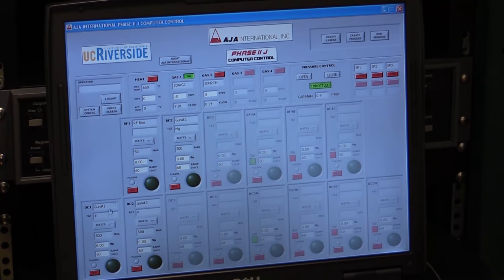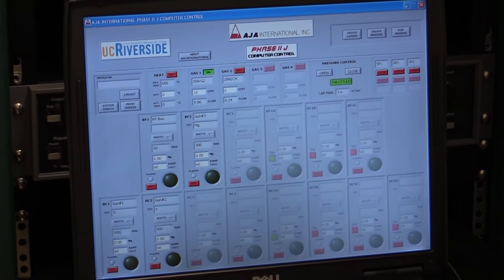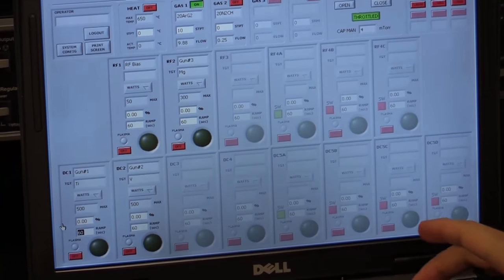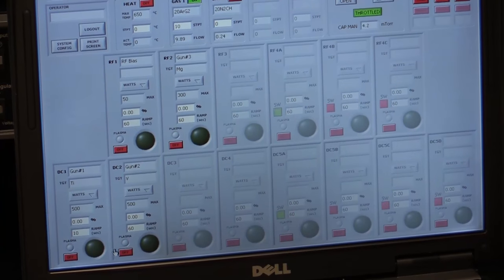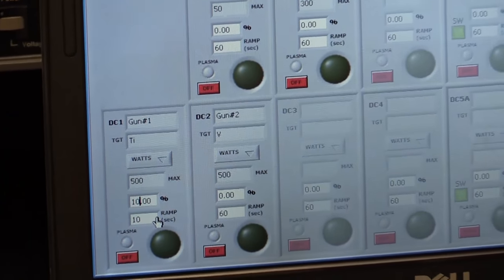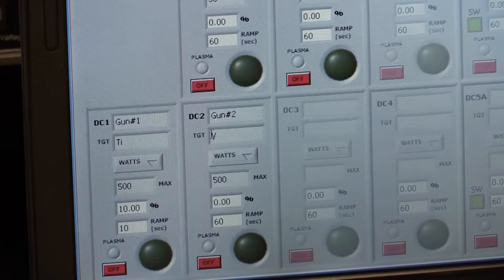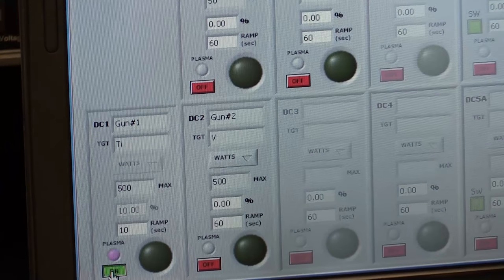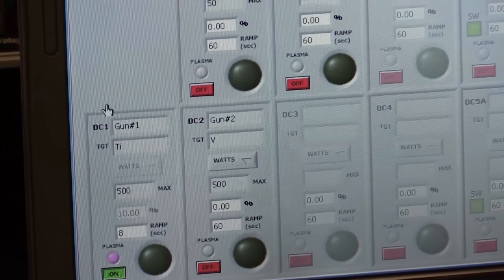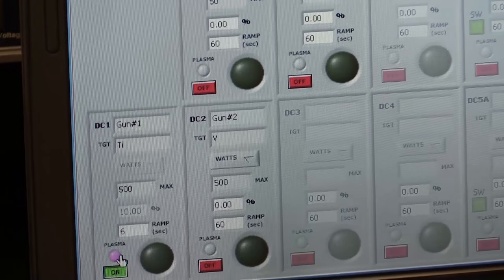I'll strike a plasma in DC1, direct current 1. I'm going to use a 10 second ramp time to get up to 10% power, which is 10% of 500 watts, so 50 watts. We see this purple light comes on, which indicates that we have a plasma.